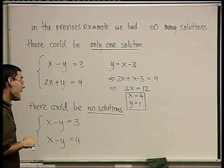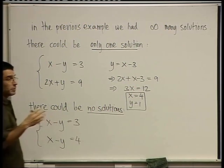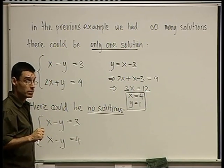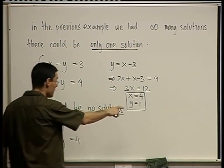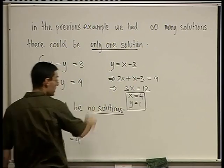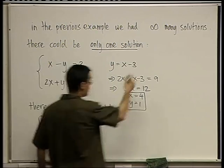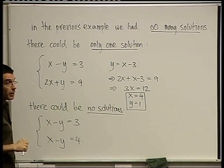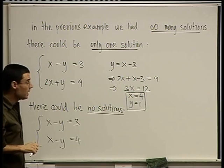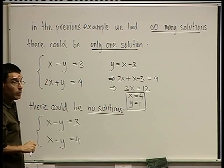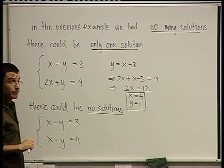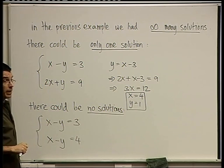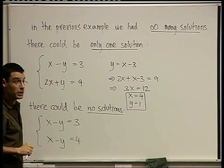So one might ask, could there be a system of equations that has exactly seven solutions? So we know that there could be infinitely many, there could be only one, and there could be no solutions. Those are the three examples that we encountered. Could there be precisely seven? The answer is no, but we're going to have to argue that. These are the only three possibilities for a system of linear equations.